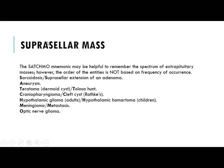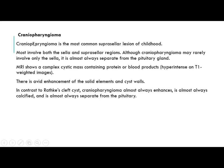Now we start with suprasellar mass. The suprasellar region has a large number of differential diagnoses, but according to the age of the patient and presentation we can limit it. A mnemonic is used for easy recall: 'SATCHMO' — Sarcoidosis/Suprasellar extension, Aneurysm, Teratoma/Tuber cinereum hamartoma, Craniopharyngioma/Cyst (Rathke's), Hypothalamic glioma/Hypothalamic hamartoma, and Meningioma/Metastasis/Optic nerve glioma.